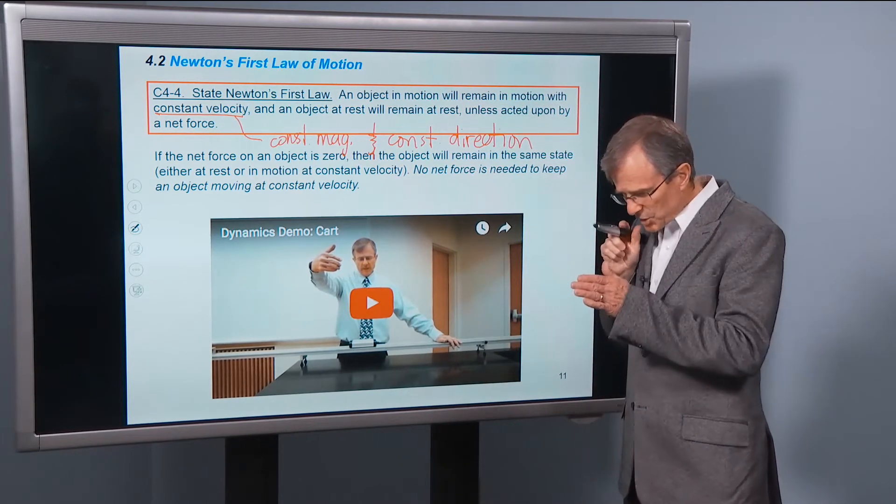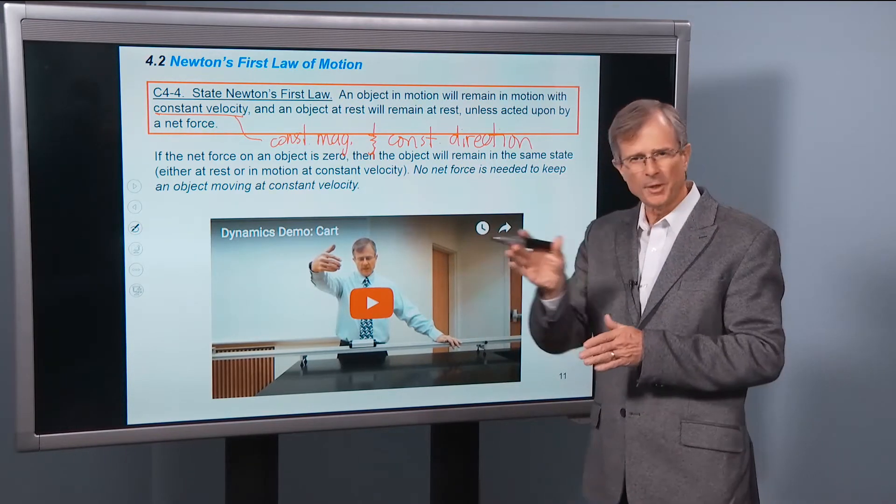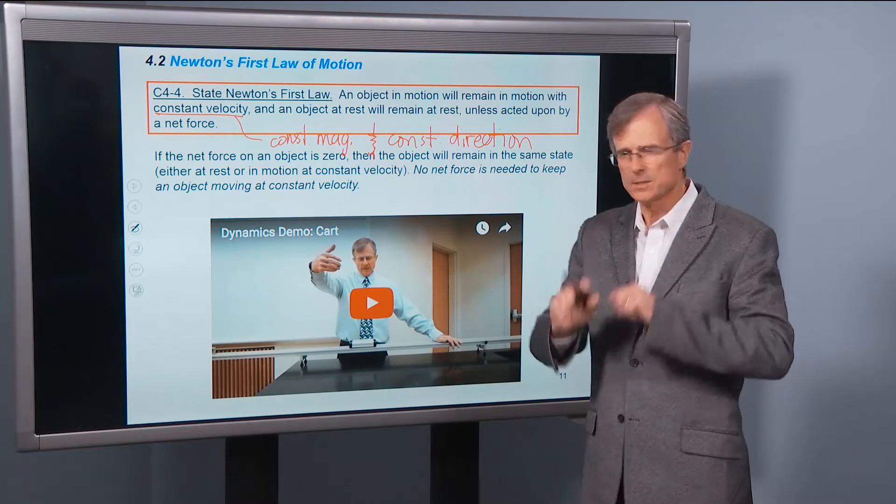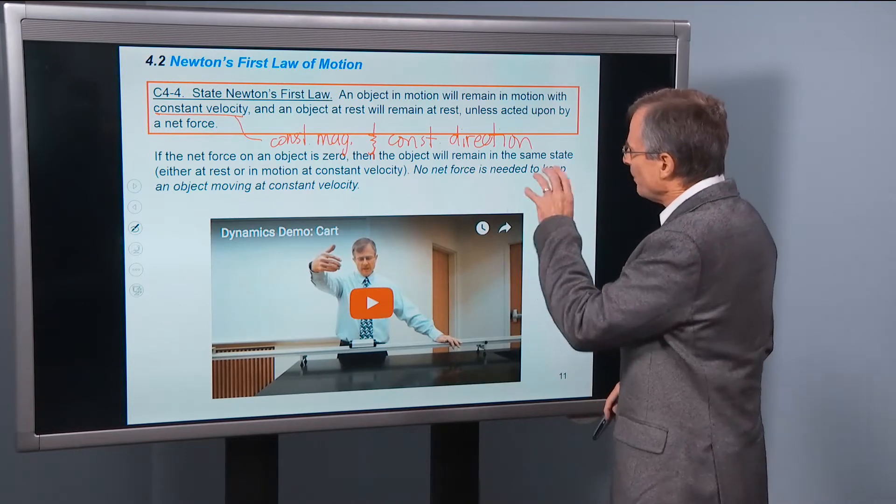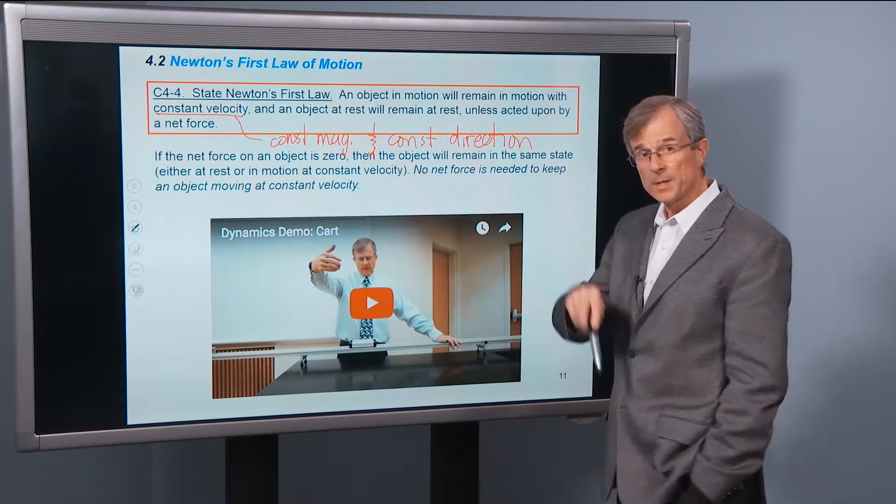So that means you're going down a straight road, neither going up or down, or side to side. You're going 55 miles an hour. That's constant velocity. Okay, so back to the law. An object in motion will remain in motion with constant velocity,